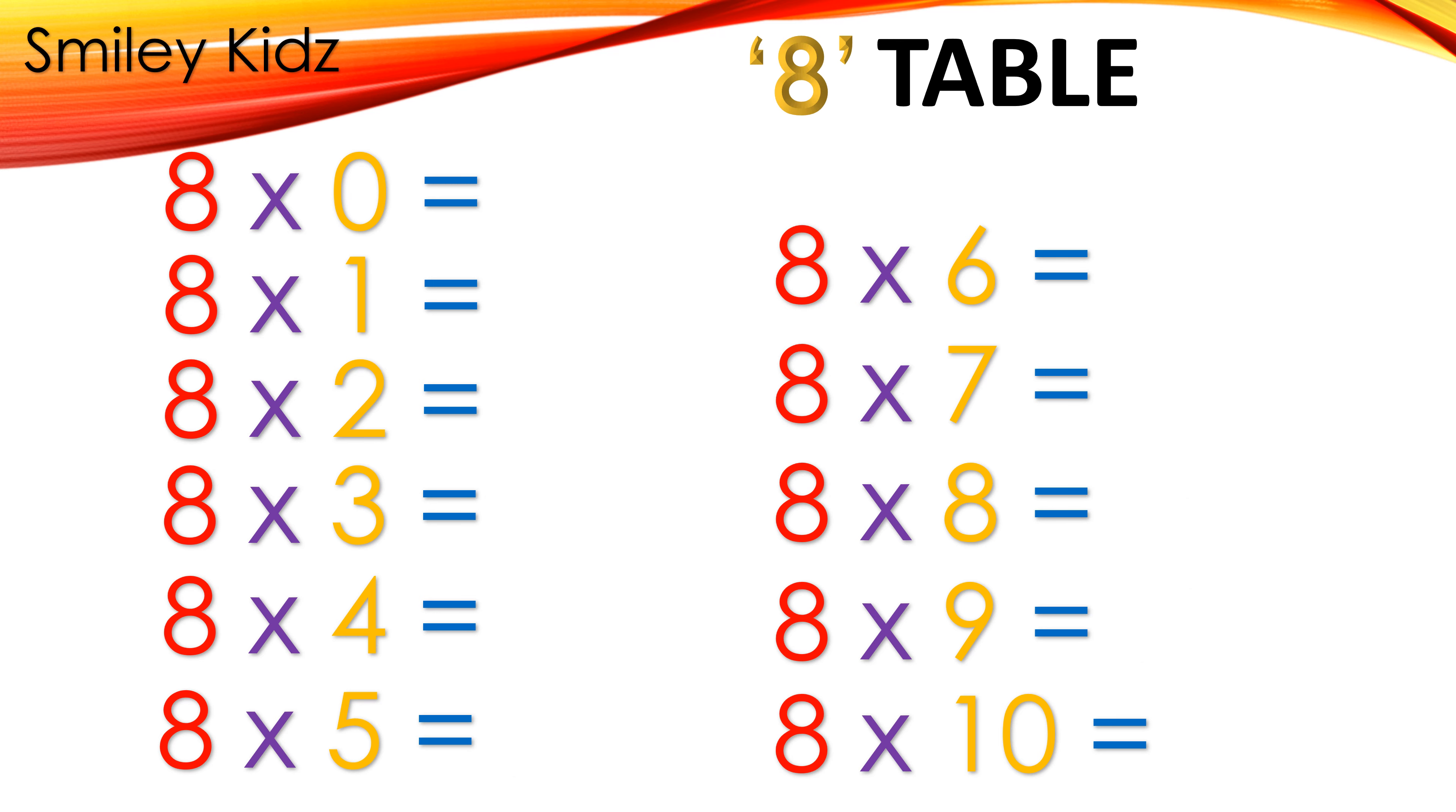8 table: 8 times 0 is 0, 8 times 1 is 8, 8 times 2 is 16, 8 times 3 is 24, 8 times 4 is 32, 8 times 5 is 40, 8 times 6 is 48, 8 times 7 is 56, 8 times 8 is 64, 8 times 9 is 72, 8 times 10 is 80.